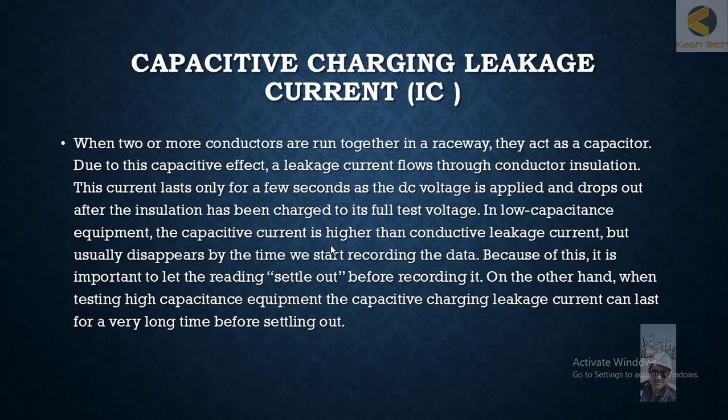The topic is capacitive charging leakage current. When two or more conductors are run through a raceway, they act as a capacitor. Due to this capacitive effect, a leakage current flows through the conductor insulation. This current lasts only for a few seconds as the DC voltage is applied, and drops out after the insulation has been charged to its full test voltage.